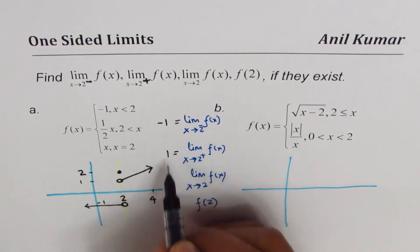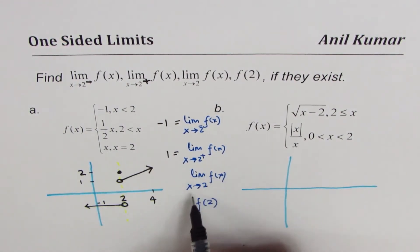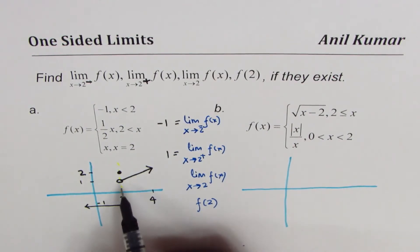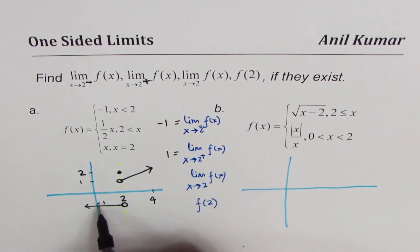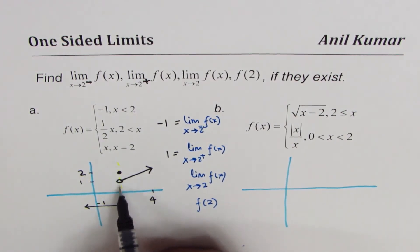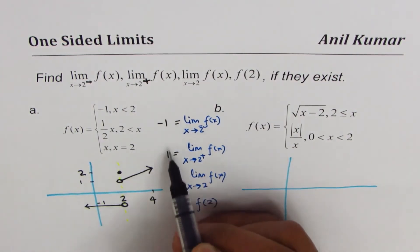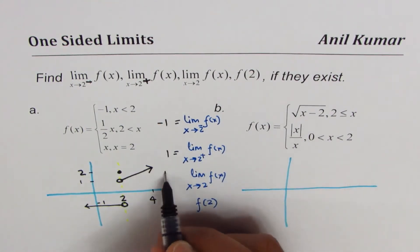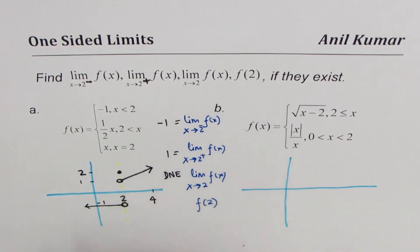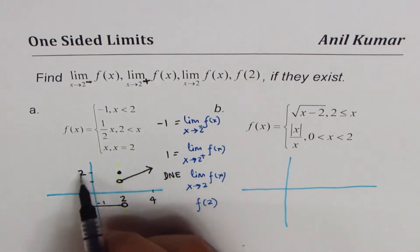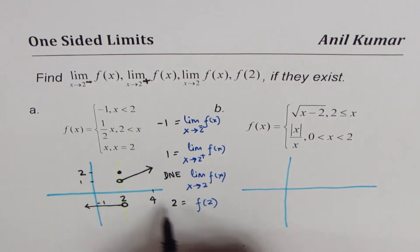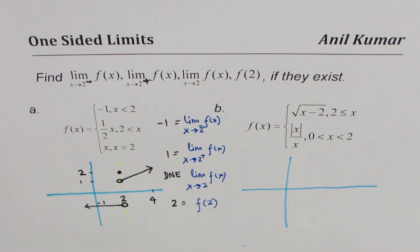You can see a jump discontinuity at x = 2. Since the left-hand limit is -1 and the right-hand limit is +1, they are not the same, so the two-sided limit does not exist. The value of the function at 2 is given by the third piece as f(2) = 2. That is how you answer questions based on piecewise functions for limits.